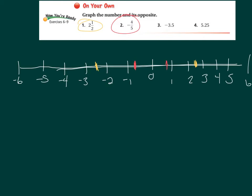In blue, negative three point five is right between negative three and negative four; its opposite is right between positive three and positive four. In green, five point two five — positive five and one-fourth should be closer to five than six, and negative five and one-fourth should also be closer to five than six. Notice that all matching colors are the same distance from zero.